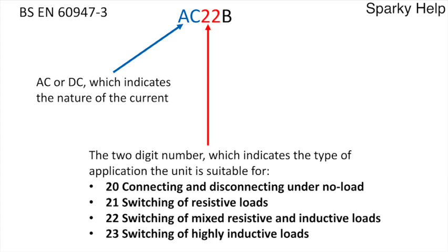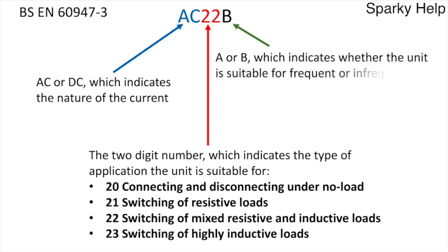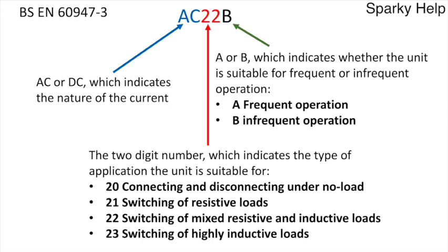If you look at a switch that says 20 on it, it's connecting and disconnecting under no load — so that is a pure isolator. If you see AC20, it is an off-load switch and you probably wouldn't want to see it as a main switch within the installation, because you'd want to be able to turn it off in an emergency. The final letter — A or B — means frequent or infrequent operation. You'd have to go to the manufacturer for their definition, but it could be many hundreds if not thousands of operations difference between each one.